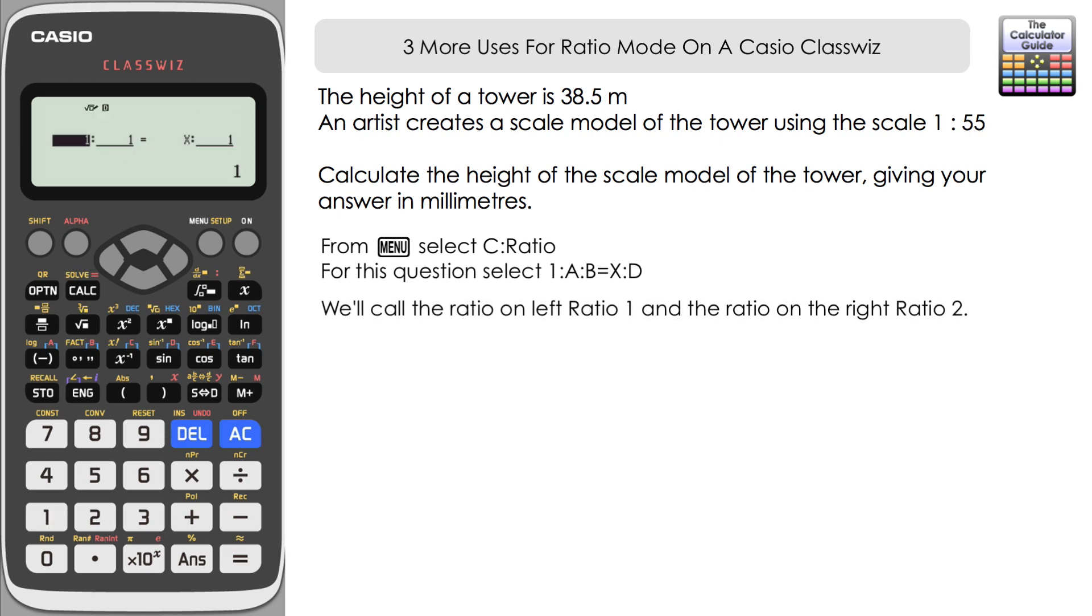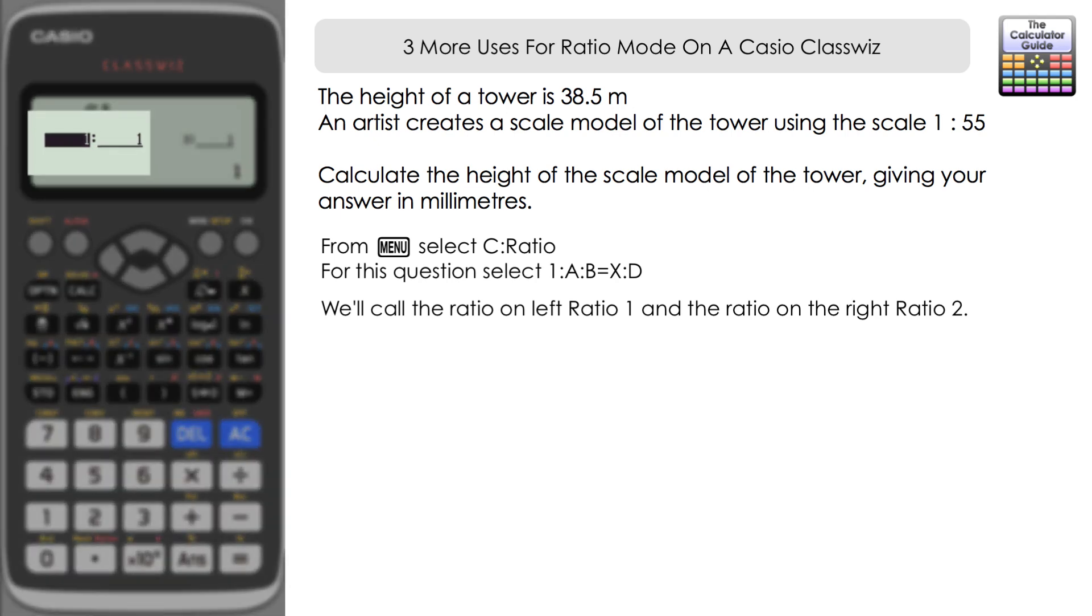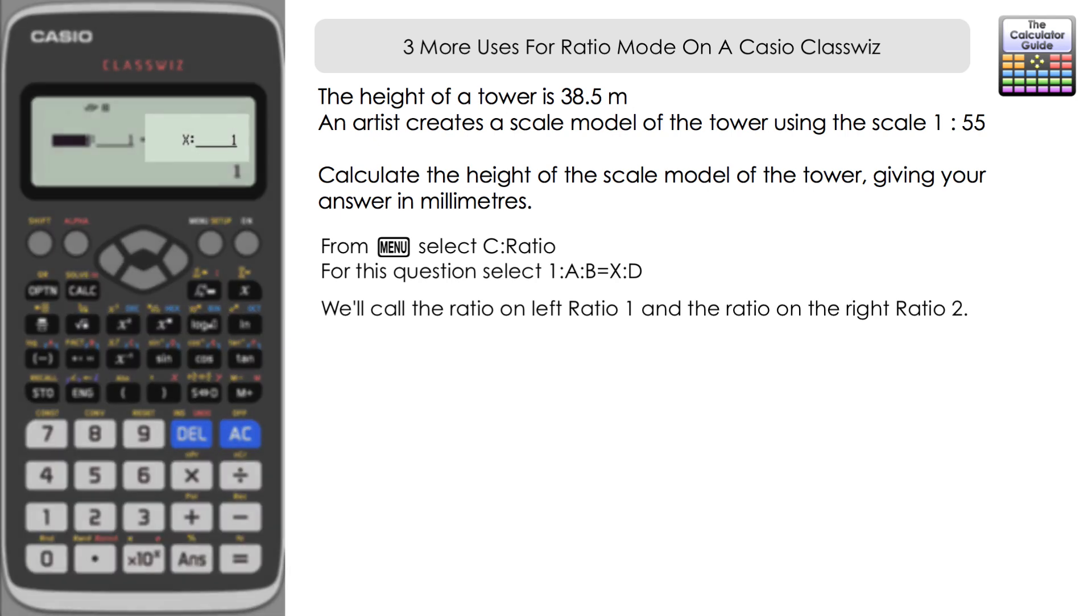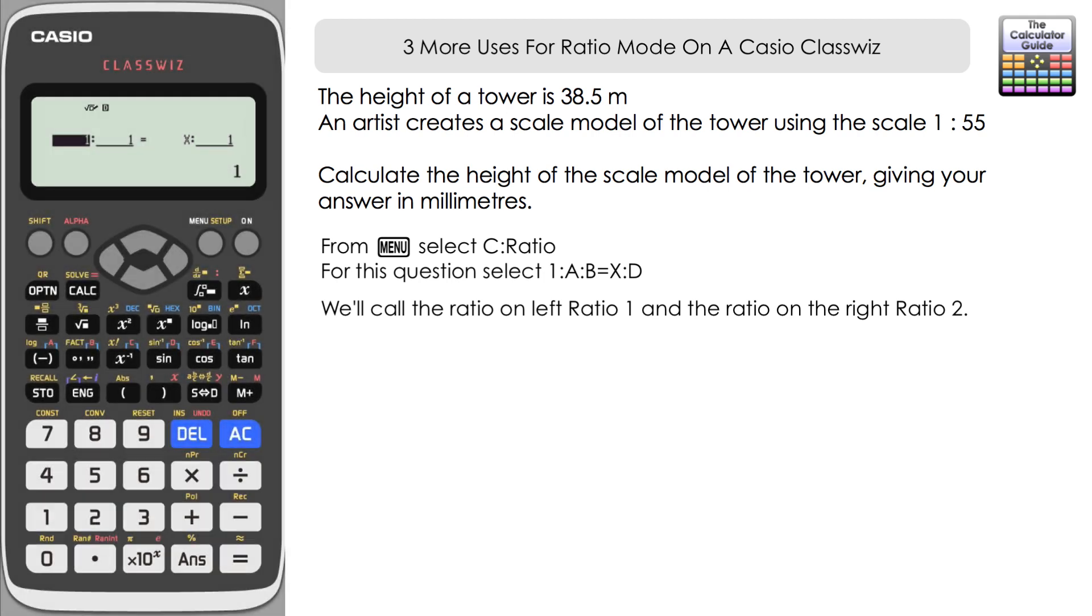Our unknown is on the left-hand side of the right-hand ratio. It's going to get a little bit confusing. So I've called the ratio on the left ratio 1 and the ratio on the right ratio 2. Ratio 1 is going to be the ratio that we know, which is the ratio of the scale, 1 to 55. I like to think of this as we'll put the model on the left-hand side of ratio 1 and what it would be in real life on the right-hand side.